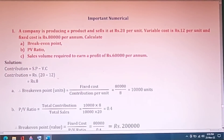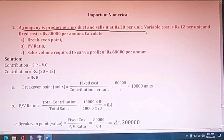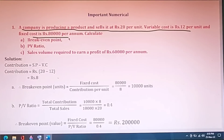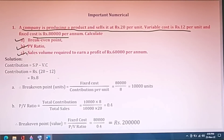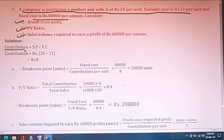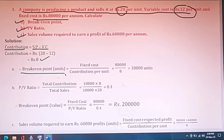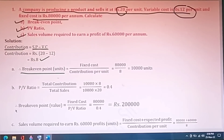Now moving to numericals. A company produces a product and sells it at Rs.20 per unit, variable cost at Rs.12, and fixed cost at Rs.80,000. Calculate break-even point, PV ratio, and sales volume required. This type of question came in June as well. First, find contribution: contribution equals selling price minus variable cost, that is 20 minus 12 equals Rs.8.